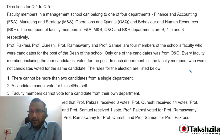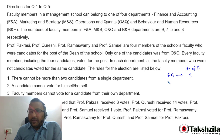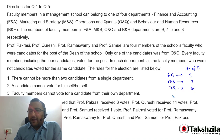Let me write the data in a shorter manner. The number of faculties: in department F&A the number of faculties are 9; in department M&S the number of faculties are 7; in department O&Q the number of faculties are 5; and in department B&H the number of faculties are 3.